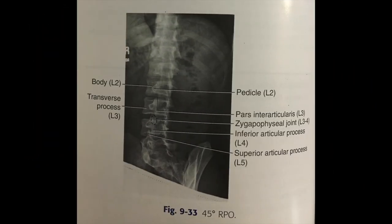Anatomy demonstrated is the visualization of the zygapophyseal joint. RPO and LPO show the downside joint; RAO and LAO show the upside joint.